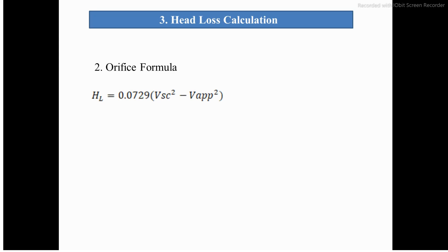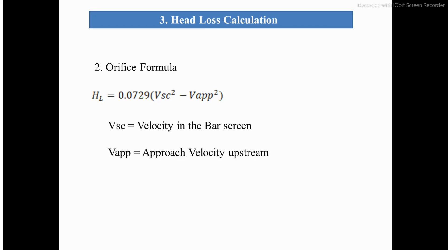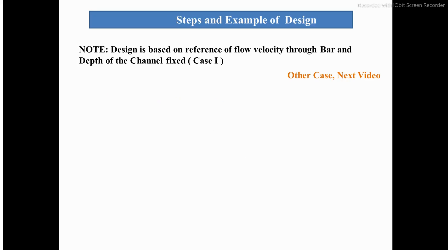The second head loss formula is the orifice formula, where Vsc is the velocity in the bar screen and Vap is the approach velocity upstream. The steps of the design will now be presented.